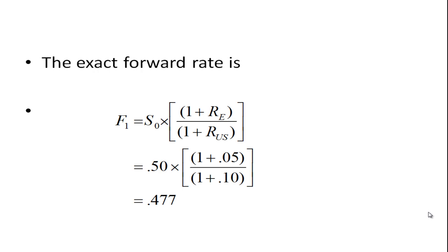If we want the exact relationship, we plug into the equation: £0.50 times the ratio of (1 + 0.05) over (1 + 0.10). You see we're pretty close: £0.477 per US dollar, as opposed to £0.475.